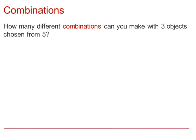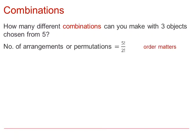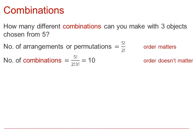So, when we are talking about how many different combinations you can make with three objects chosen from five, whilst the number of different permutations where order did matter was five factorial over two factorial — or in effect, five times four times three — when we are talking about combinations and the order doesn't matter, we need to divide by three factorial again, and that gives us our ten that we got through listing.